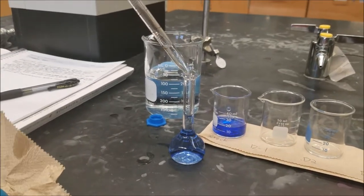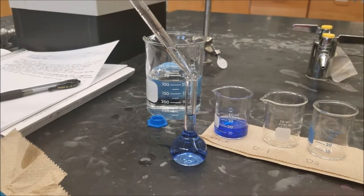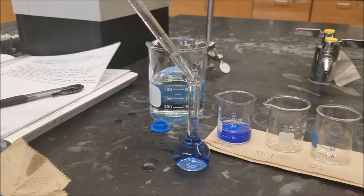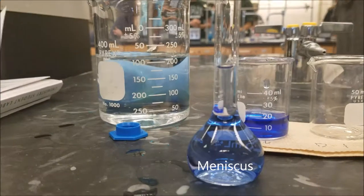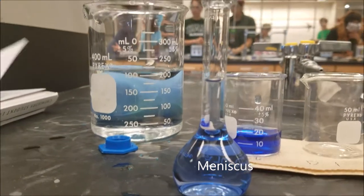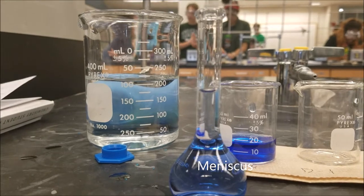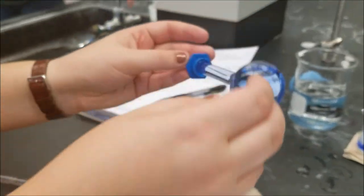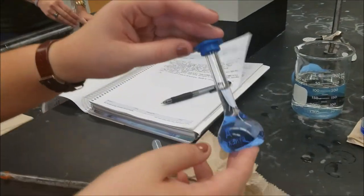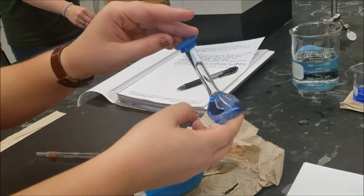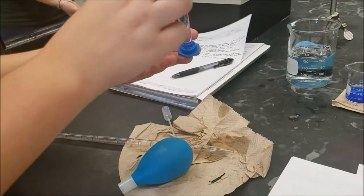Since you repeat this procedure for each dilution, the final volume will always be 25 mL. Next, put the cap on the flask and mix the solution with the water. Pour this dilution into a clean beaker. You will repeat this procedure for each dilution.